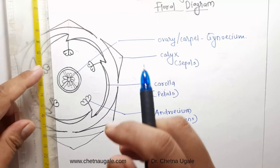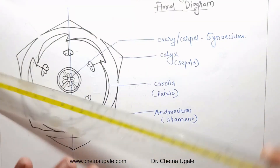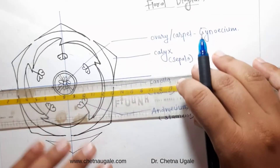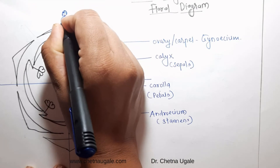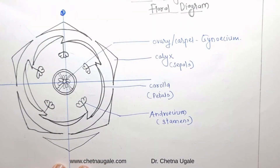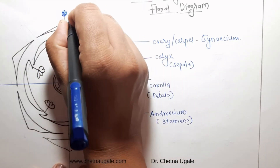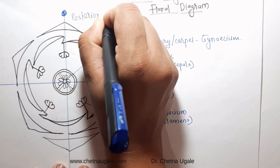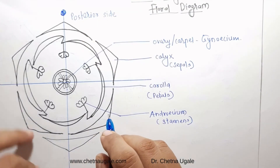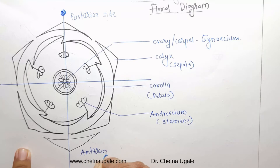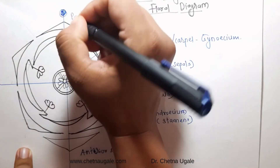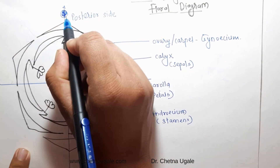There are two styles for the floral diagram. If we divide the floral diagram into four equal halves, the side towards the mother axis is called the posterior side, while the outer side is called the anterior side. Towards the posterior side there is the position of the mother axis.